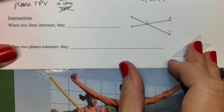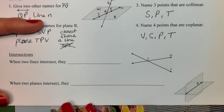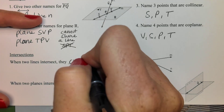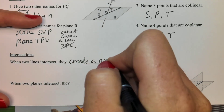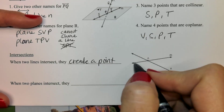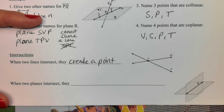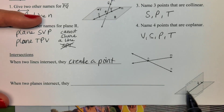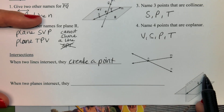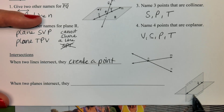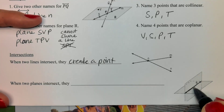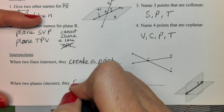Then we have some intersections — what happens when two things hit? When two lines intersect, they create a point. When two planes intersect — think about two sheets of paper, or when a wall hits the ceiling — it creates a line.